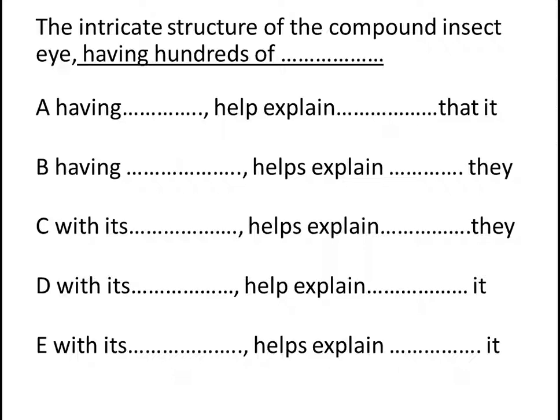If you compare options vertically, at the end of the options, you can see we have a split of 'it' and 'they'. This is a singular-plural pronoun error. If you go back to the main sentence, the pronoun must refer to the intricate structure, which is the main subject of the sentence. Intricate structure is singular, so we can eliminate options B and C as they have the plural pronoun.